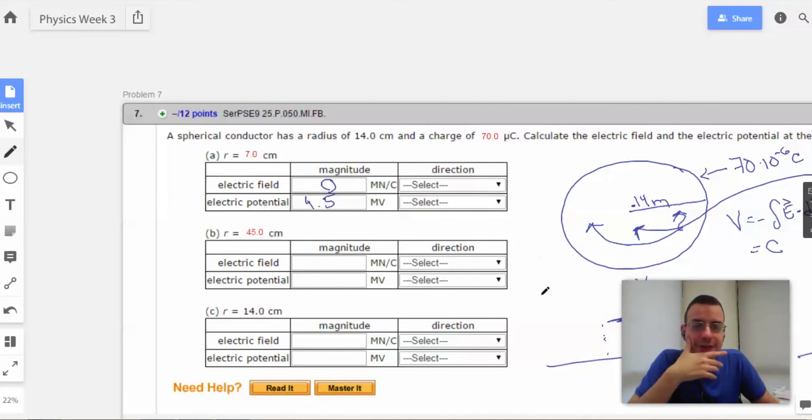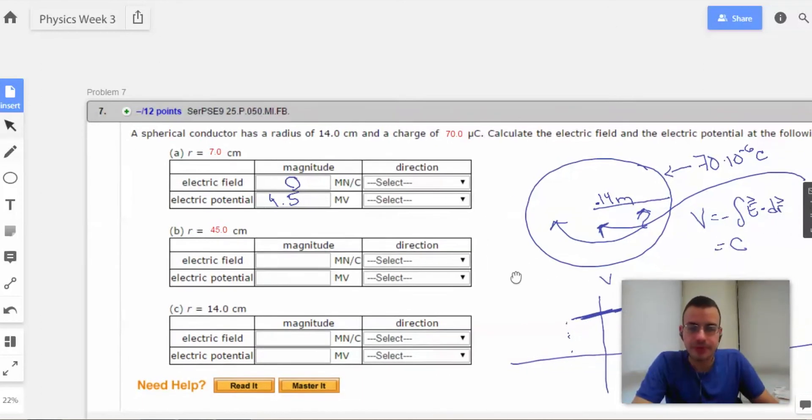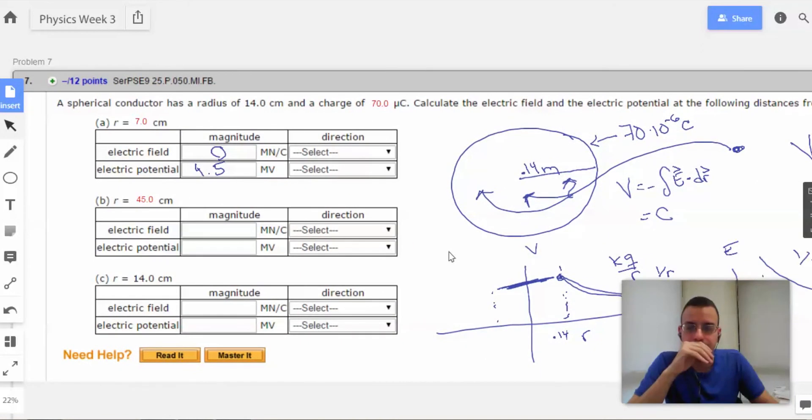And the direction, I'm going to say none. There should be no direction associated with a potential. Potential is a scalar, so there's going to be no direction.